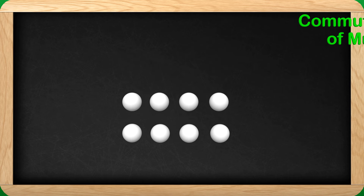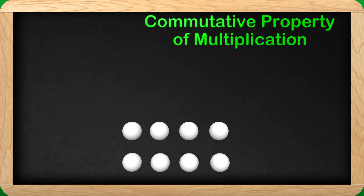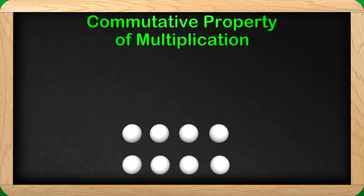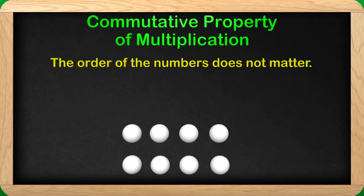This is like a rule in math. Can you say this with me? Commutative property of multiplication. Great job! Now here is the definition: the commutative property of multiplication says the order of the numbers does not matter.